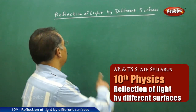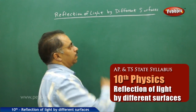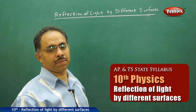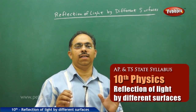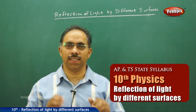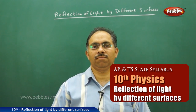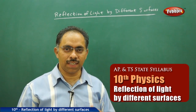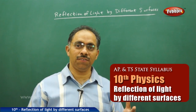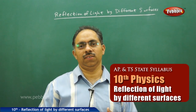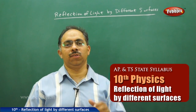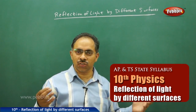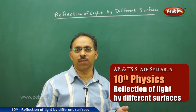We will now see reflection of light by different surfaces. First of all, let us try to understand what is light. Light is a form of energy that gives us the sensation of vision. Earlier we have studied about light traveling in straight lines, forming shadows.